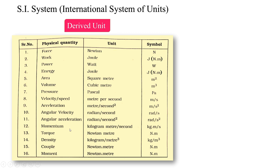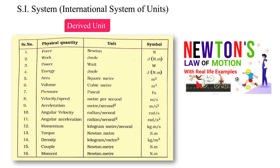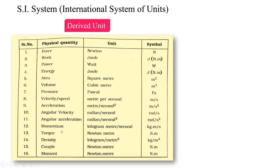Momentum means mass into velocity — it is the product of mass and velocity. We discussed this in Newton's second law, where the rate of change of momentum is proportional to force. Its unit is mass into velocity: the unit of mass is kg and the unit of velocity is meter per second, so the unit of momentum is kilogram-meter per second.